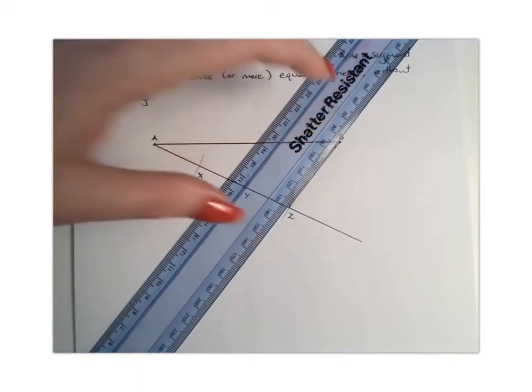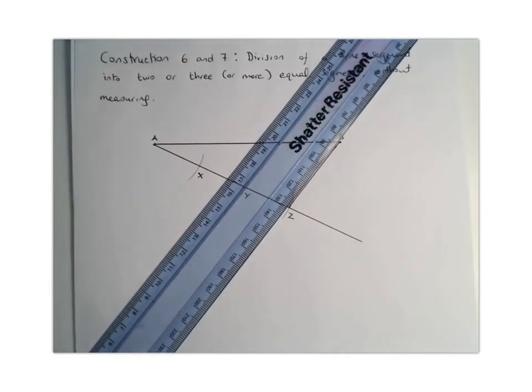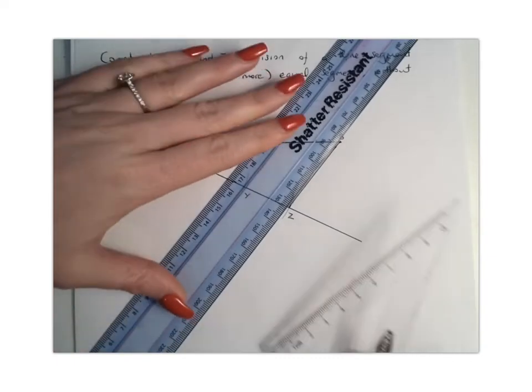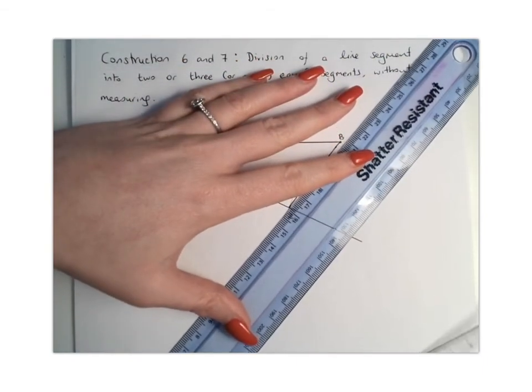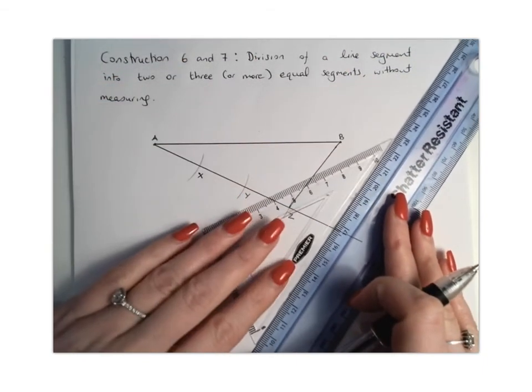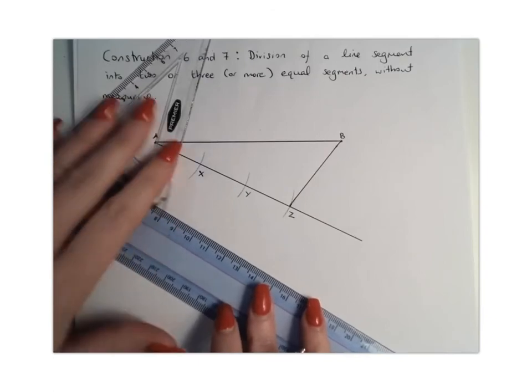And what you're going to do next is we need to basically find, move our ruler up along to ensure that we are finding the parallel lines to that line. So again, there's lots of different ways that you can do this. But if you imagine it, what we're trying to do here is, I'll set up my ruler like this.